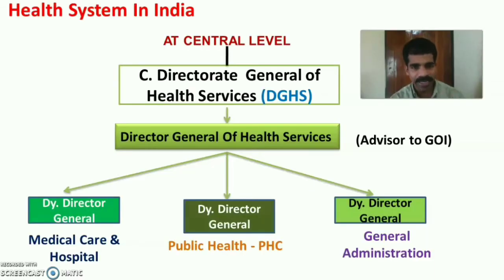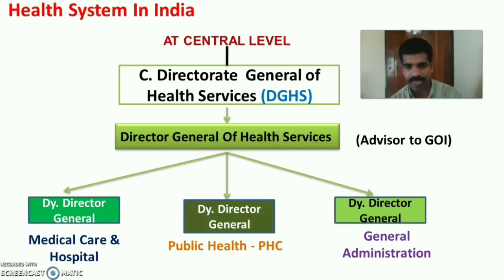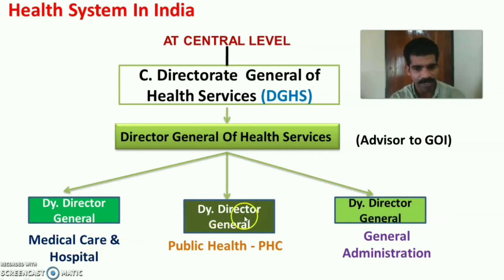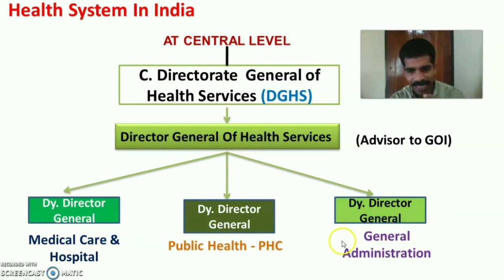In short, at central level, health system in India has DGHS headed by Director General of Health Services, who is the Chief Advisor to the Government of India on Medicine and Public Health. Three main units under DGHS are each headed by a Deputy Director General — for Medical Care and Hospital, for Public Health through Primary Health Centre, and for General Administration.